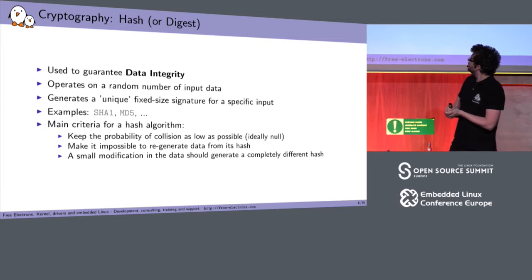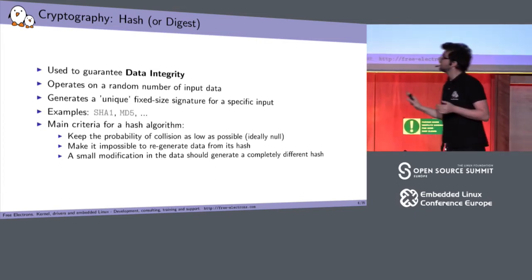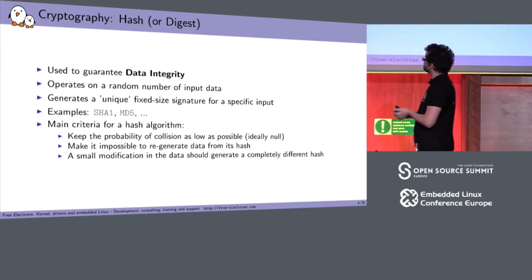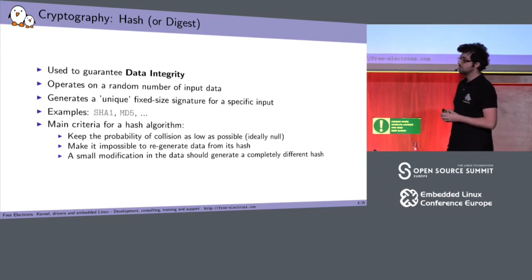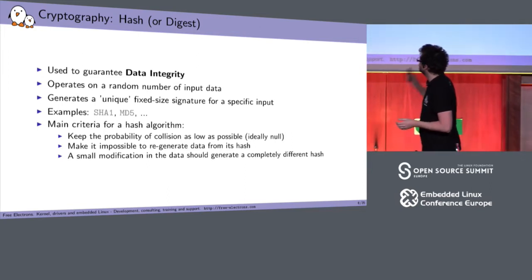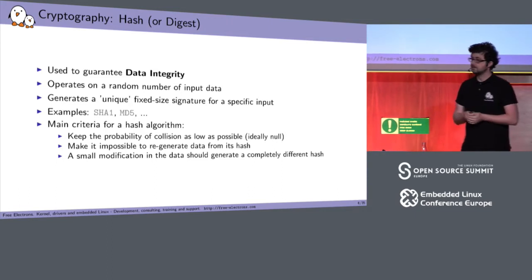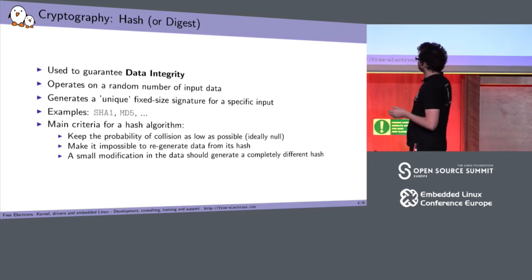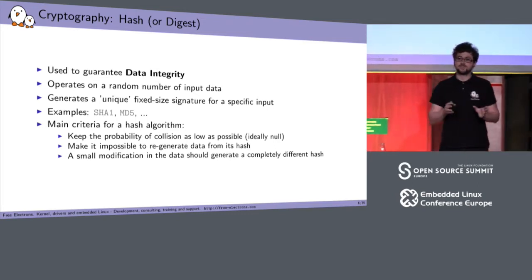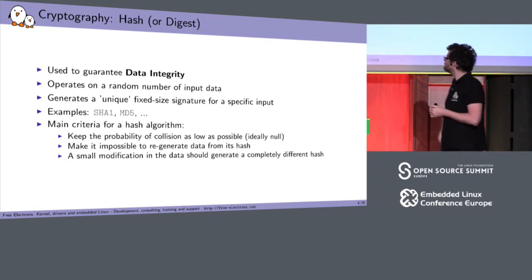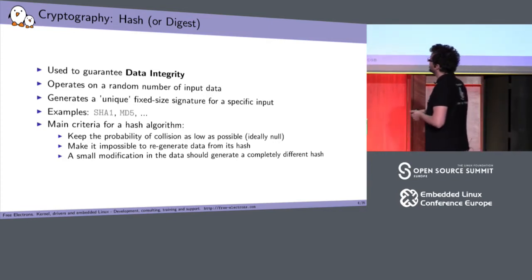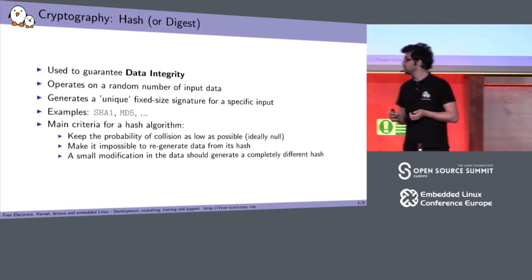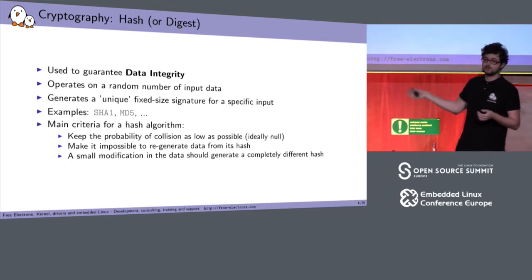The first thing we'll see in cryptography is the cryptographic hash, sometimes called a digest. This is the part which is supposed to guarantee the integrity of your data. Hashing functions operate on a random number of input bytes and generate a unique fixed-size output which is most of the time shorter than the input. Examples include SHA-2, SHA-1, and MD5, and there are many more.